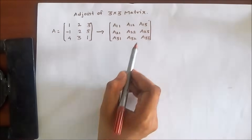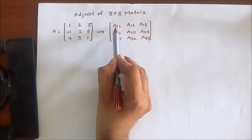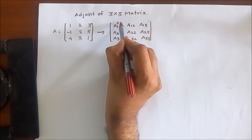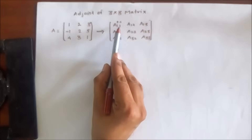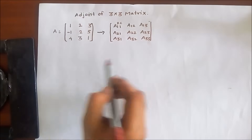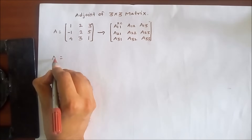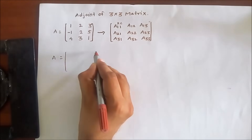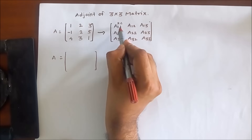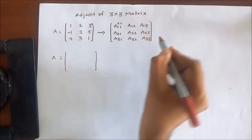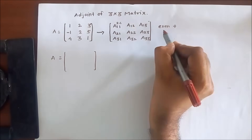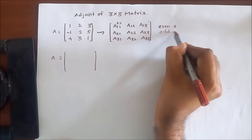Now here we have to find out the adjoint. For that purpose we have to see the value of A11 — the first number indicates the row and the second number indicates the column. In that shortcut method we have to use some tricks for finding out the adjoint. If we add these two numbers, 1 plus 1, that will give an even number. Even number is represented by a positive symbol, and odd number — like 1 plus 2 — is denoted by a negative symbol.